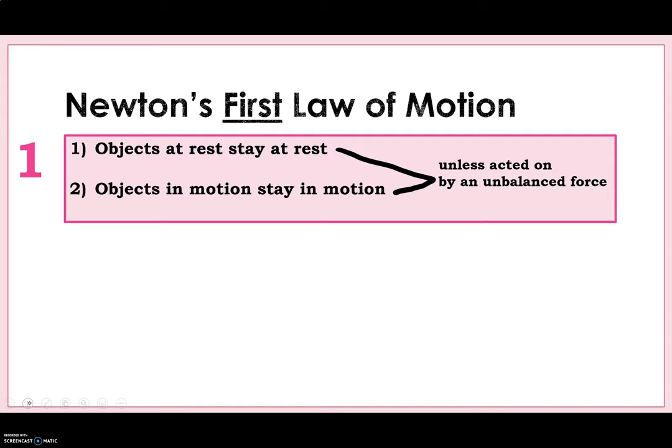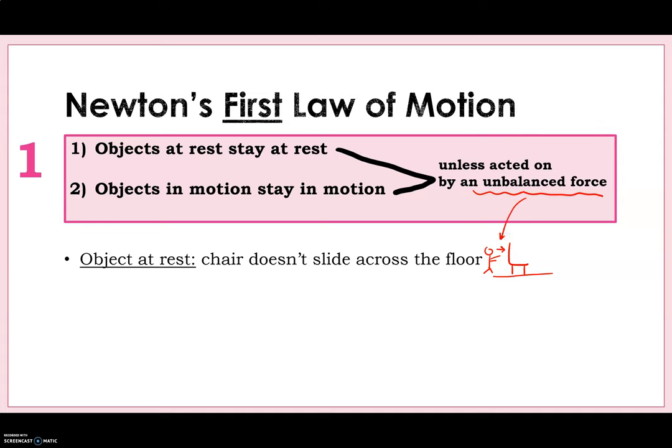Our first law of motion has two parts. One is that objects at rest stay at rest, and the second is that objects in motion stay in motion. And those two things will happen unless the object is acted on by an unbalanced force. So here's a couple examples of that. An object at rest. A chair is not going to just slide across the floor, right? Here's a chair on the ground. It's not going to move. It wants to stay at rest. If Ms. Barry comes along and pushes the chair, then the chair would start to move. That would be your unbalanced force.